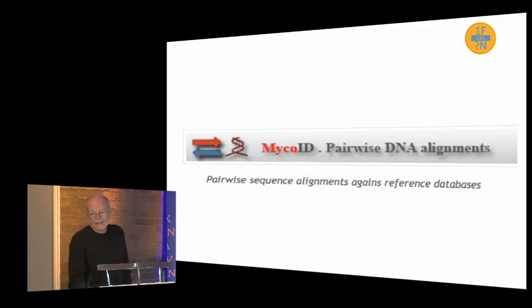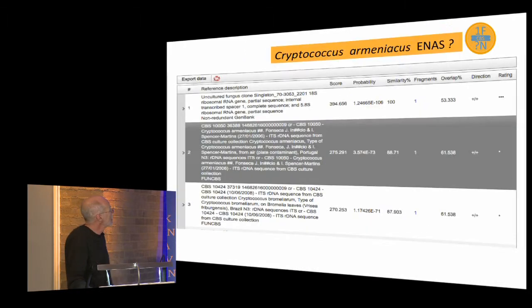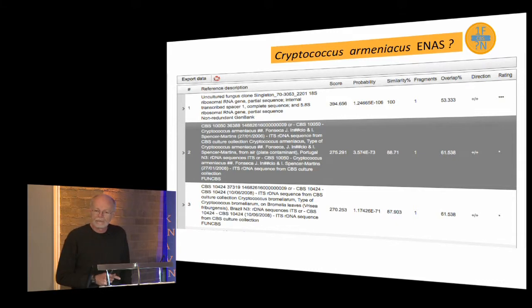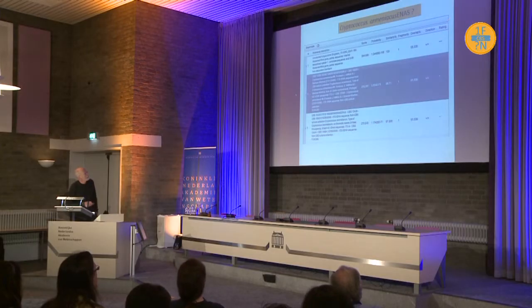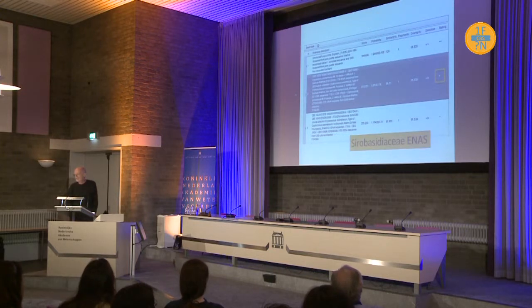Pedro mentioned MycoID. While I was at the CBS meeting, I took that same sequence and put it in their BLAST search against the CBS sequences. I got Cryptococcus ameniaeus, which was not in GenBank — it's in MycoBank and the CBS but not yet in GenBank. They have a rating of how good the sequence and name is, and it's low here. So I think we're still safe calling it in the Ceratobasidiaceae.